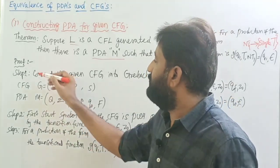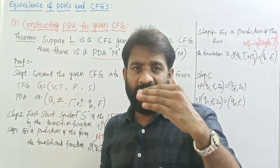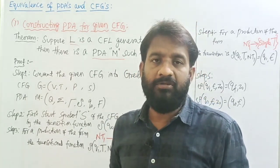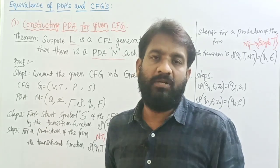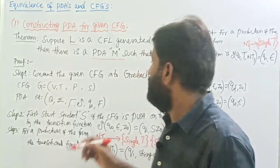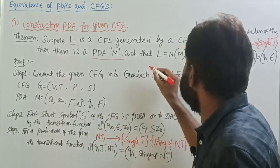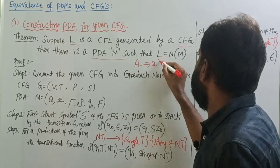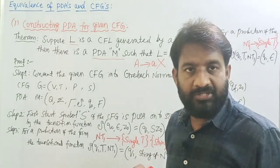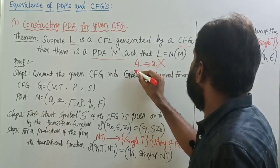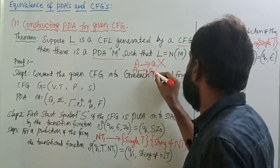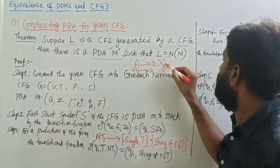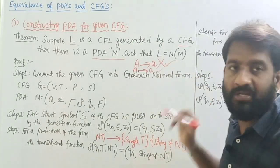There is a proof for this. First, take the context-free grammar and convert it into Greibach Normal Form without any epsilon productions. In Greibach Normal Form, a production is always of the form: A tends to a small terminal followed by any number of non-terminals, or A tends to a single terminal only.